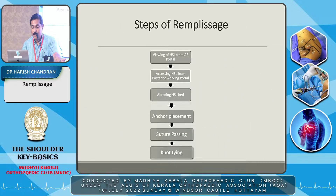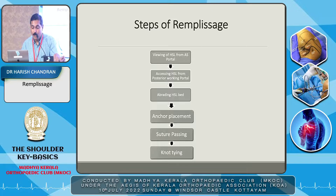The steps of Remplissage are: viewing the Hill-Sachs lesion from the anterior superior portal, accessing it from the posterior working portal, abrading the bed to create a good bleeding surface for infraspinatus healing, then anchor placement, suture passing, and knot tying.